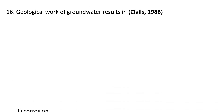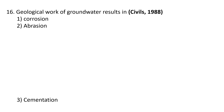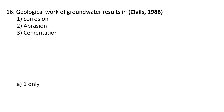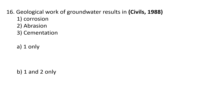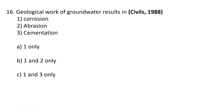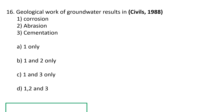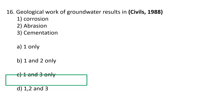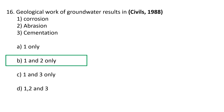Next question: Geological work of groundwater results in — 1) corrosion, 2) abrasion, 3) cementation. Choices: A) 1 only, B) 1 and 2 only, C) 1 and 3 only, D) 1, 2 and 3. Geological work of groundwater results from corrosion and abrasion, so 1 and 2 only. B is the correct answer.